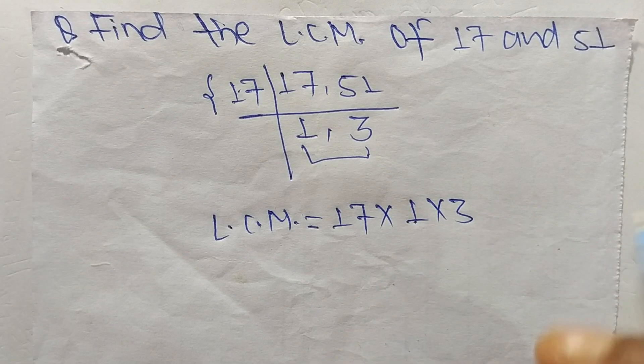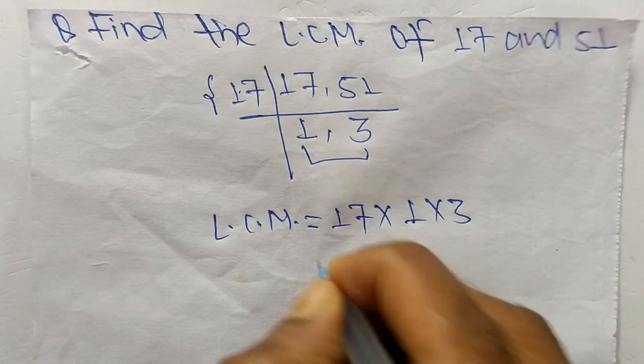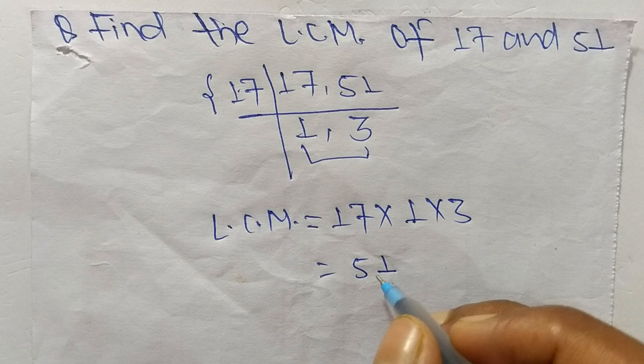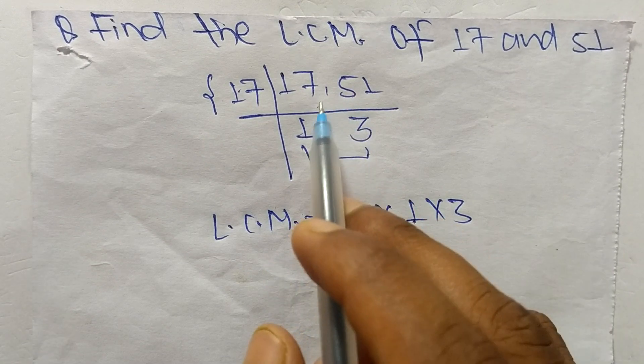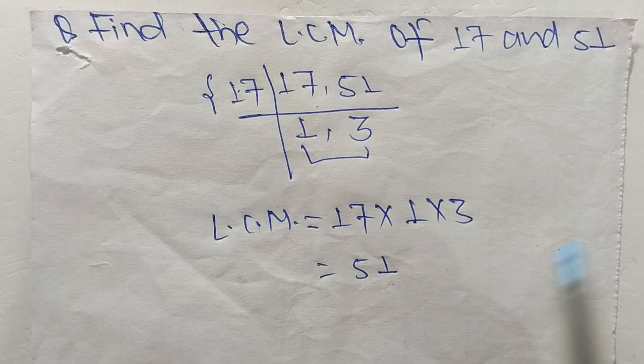So 17 times 1 means it is 17, times 3 means it is 51. So 51 is the LCM of 17 and 51. So this much for today and thanks for watching.